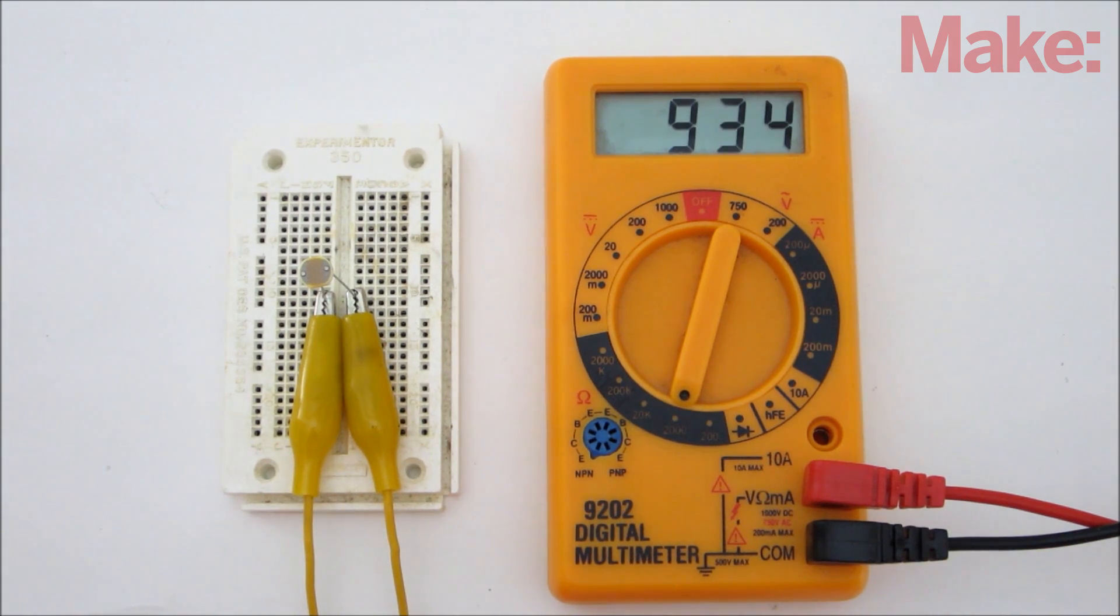The value of the second resistor should be about the same as the photoresistor when the laser is shining on it. In this case it was about 100 ohms.